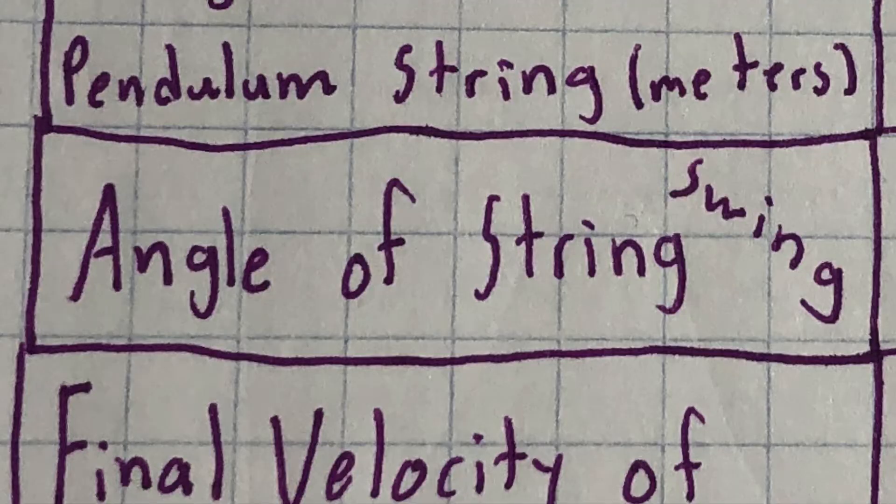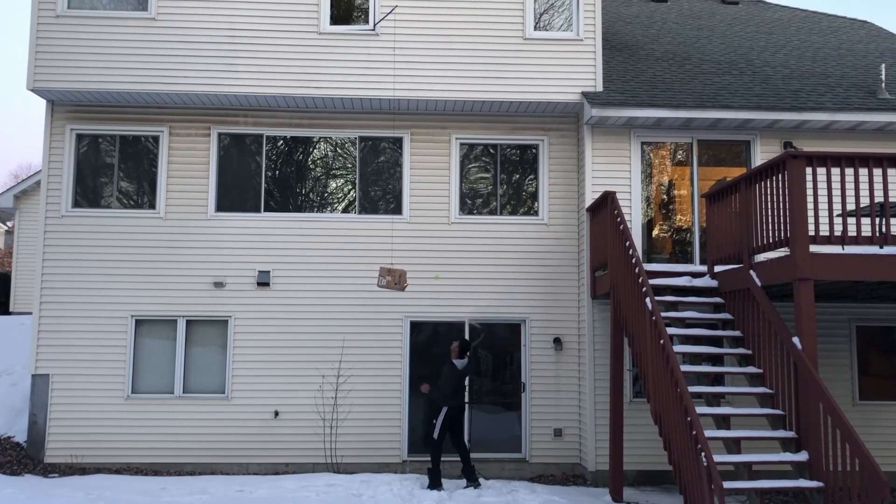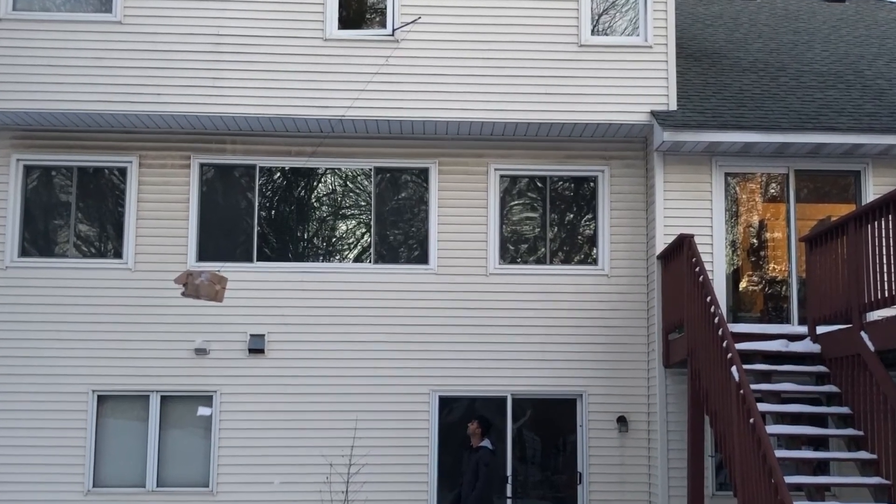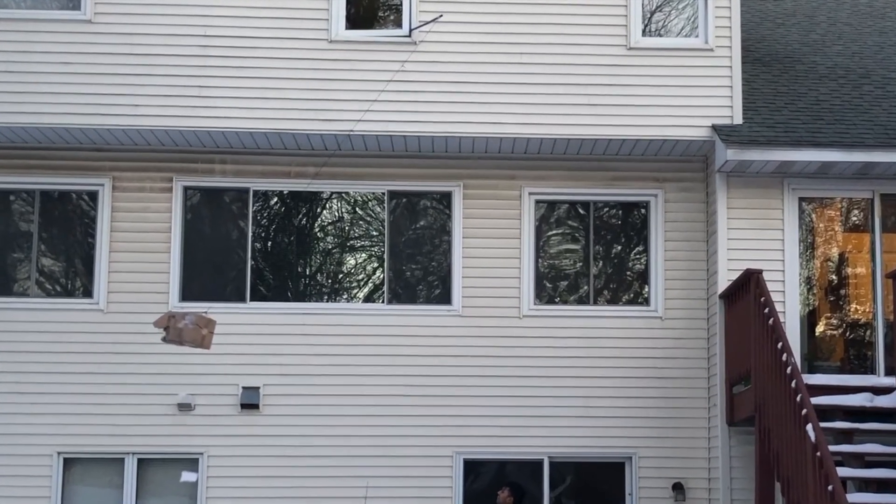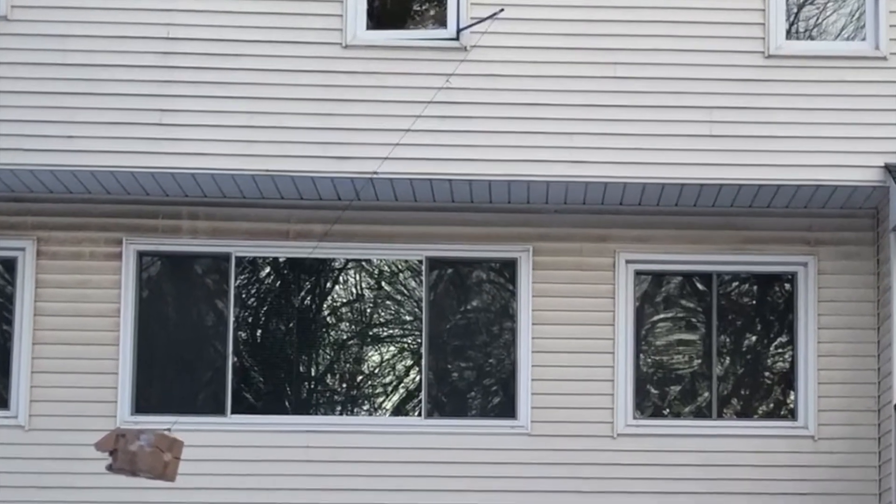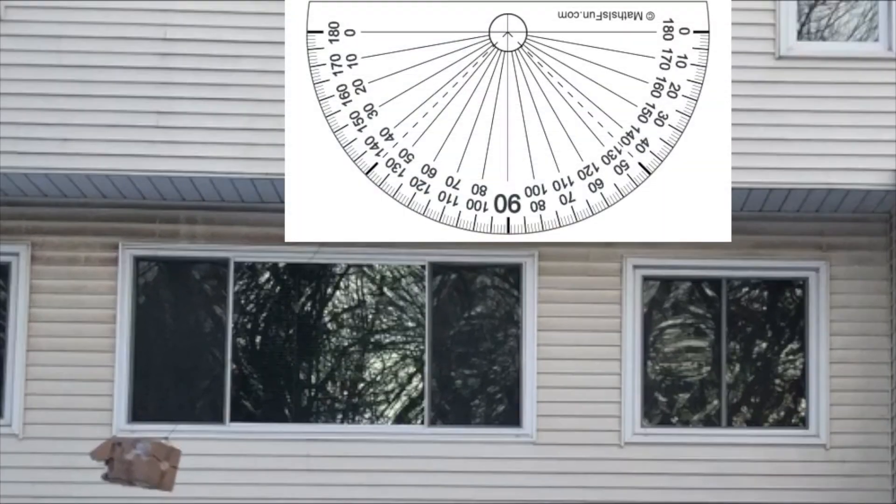Next we'll need the length of the ballistic pendulum string in meters, then we'll need the angle of the string that swung or the box that swung in the ballistic pendulum. To do this we'll use an online protractor. As it started at 90 degrees straight down, we can then zoom in and line up a protractor right to the origin of the top and then we can see that it moved about 140 degrees from 90 degrees. So if you subtract the two you get 50 degrees of movement.